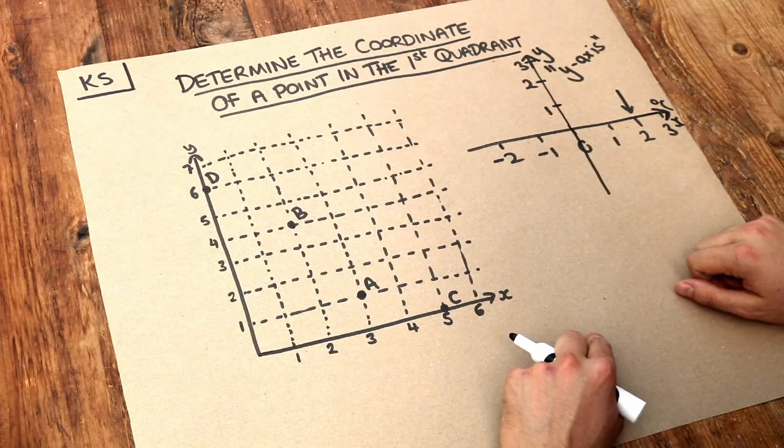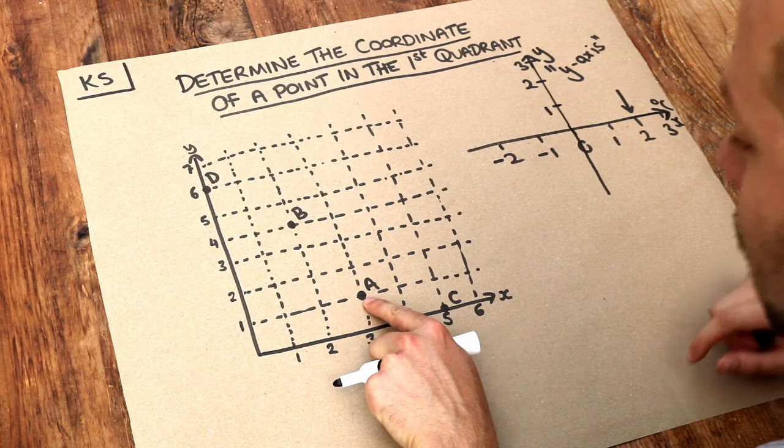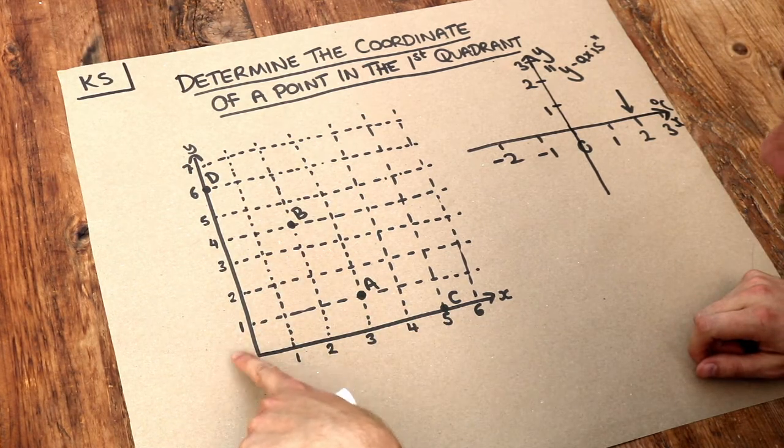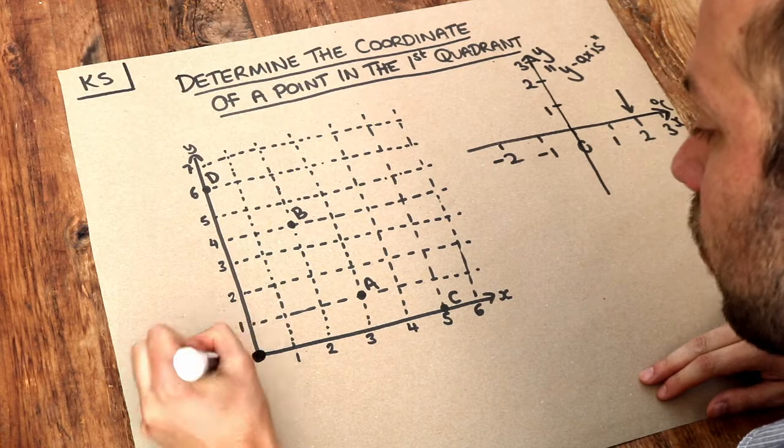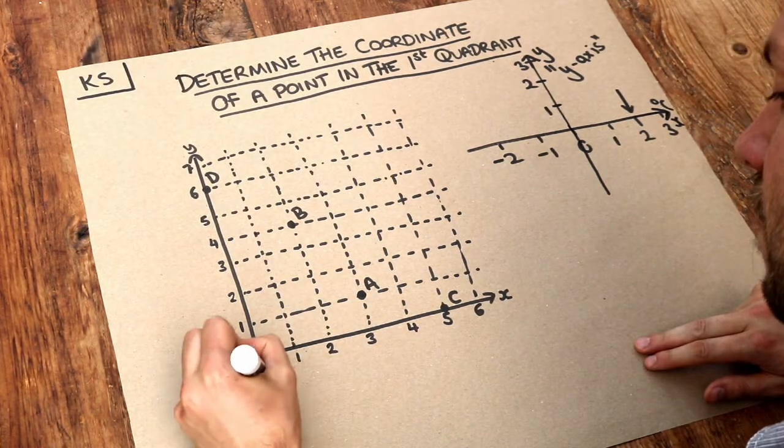So let's use some of these examples here. We want to find the coordinate of the point A. Now we first think about the left-right number line starting from here, which is known as the origin. It's where we start.